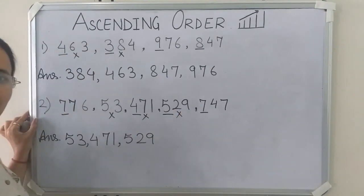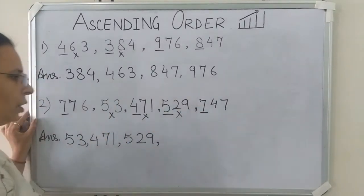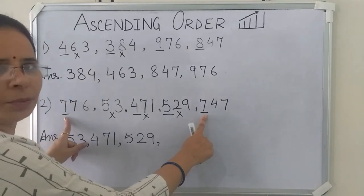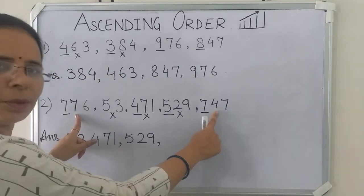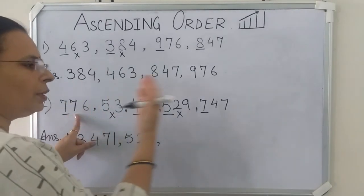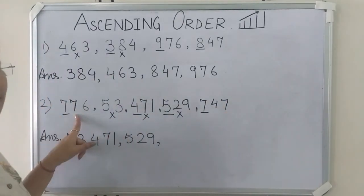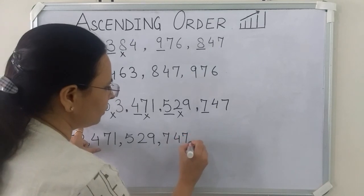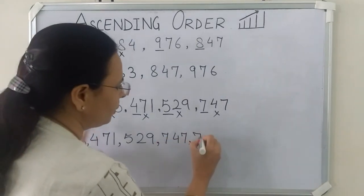We have written 529, so we will cut it. Now we have to find the smaller number between these 2 remaining numbers. You can see that in both numbers the hundreds place digits are the same. So we will compare the tens place. Here the tens place is 7, and here the tens place is 4. Since 4 is smaller than 7, we will take 747, because 747 is smaller than 776. So we write 747, and at last we write 776.